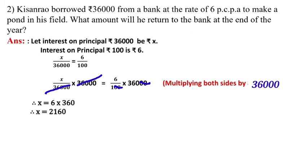We get 2,160. It means Kisanrao has to pay interest of ₹2,160. But the question asked what amount will be returned to the bank at the end of the year. So the amount formula is what? Principal plus interest. The principal was given, how much? ₹36,000.